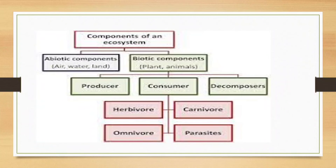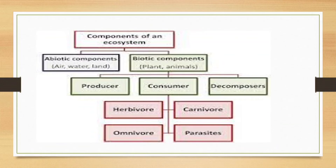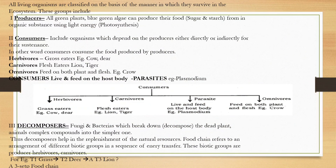The components of an ecosystem are biotic and abiotic. Abiotic components are water, land, and air. Biotic components are plants and animals. Plants and animals can be further divided into producers, consumers, and decomposers. Consumers can be herbivores, carnivores, omnivores, and parasites. All living organisms are classified on the basis of their role in the ecosystem.